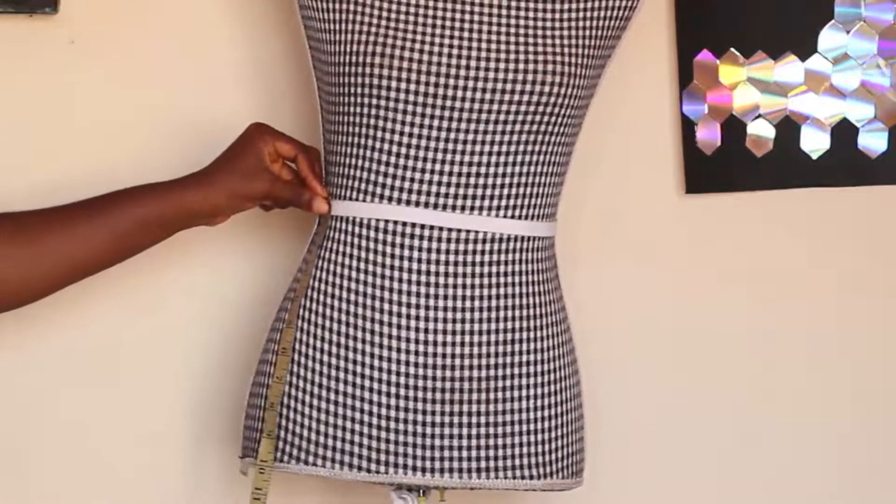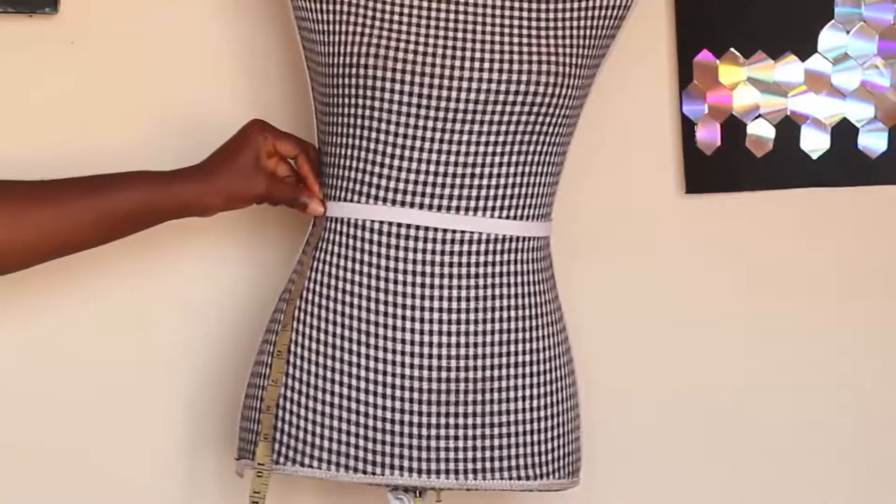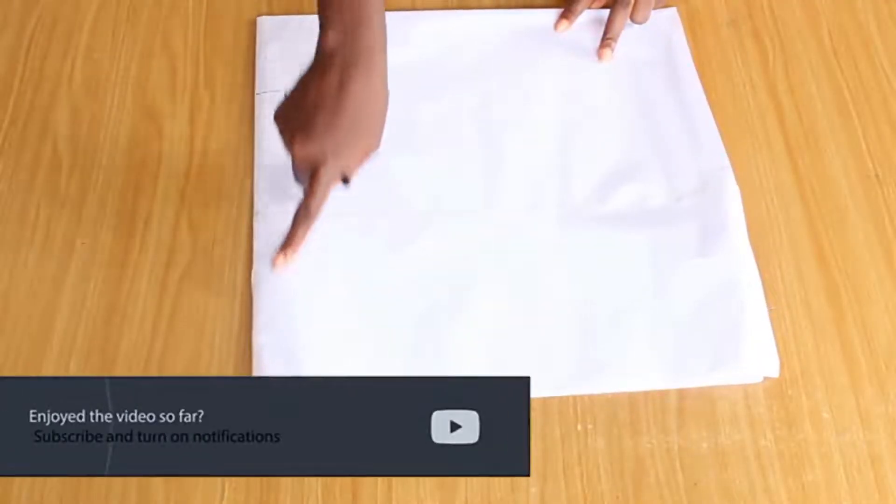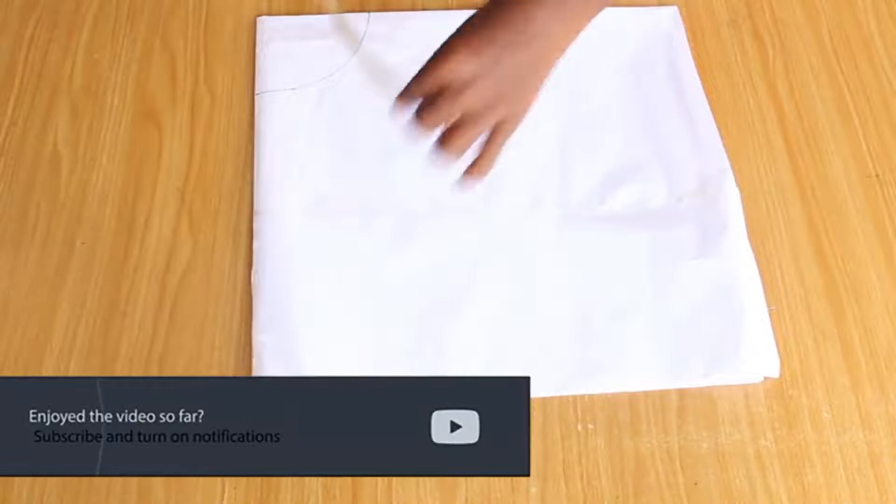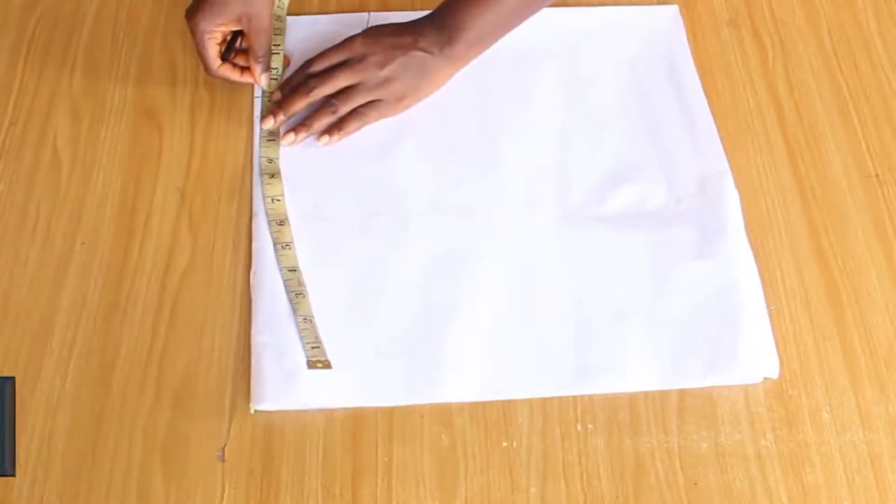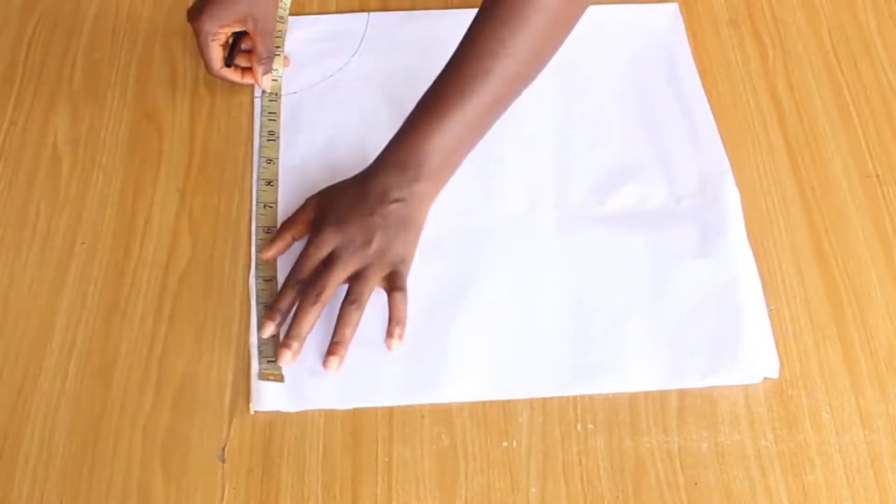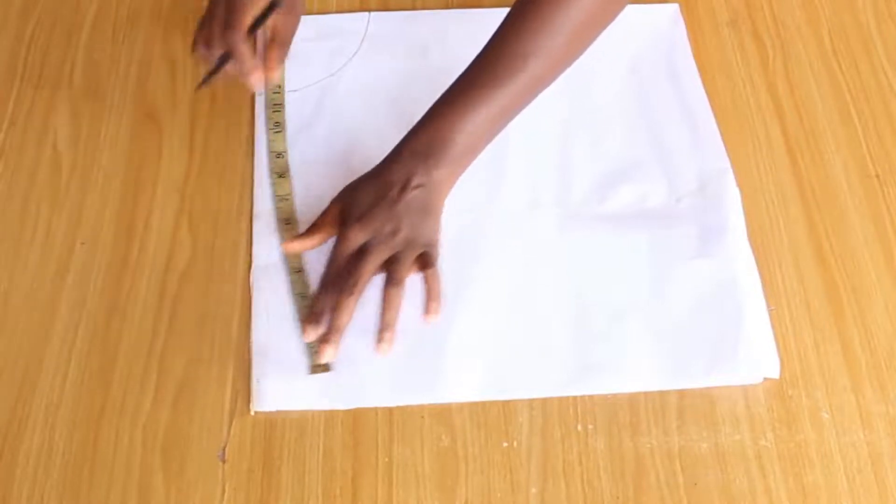I'm going to measure from this point right here. The length of the skirt is going to be 12 inches. So I'm going to place my tape on the waist line while I make my marks around.